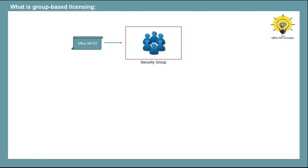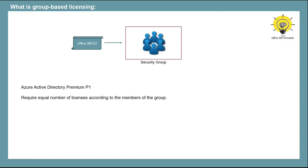All the members of that security group get that license assigned automatically. Group-based licensing is a feature of Azure Active Directory. If you want to use group-based licensing, you would require Azure Active Directory Premium P1 license, and you would require an equal number of licenses according to the members of the group. That means if you have added 100 users in a security group, you need 100 licenses in your tenant so that each member of the group can get the license assigned. Now let's move towards our lab.